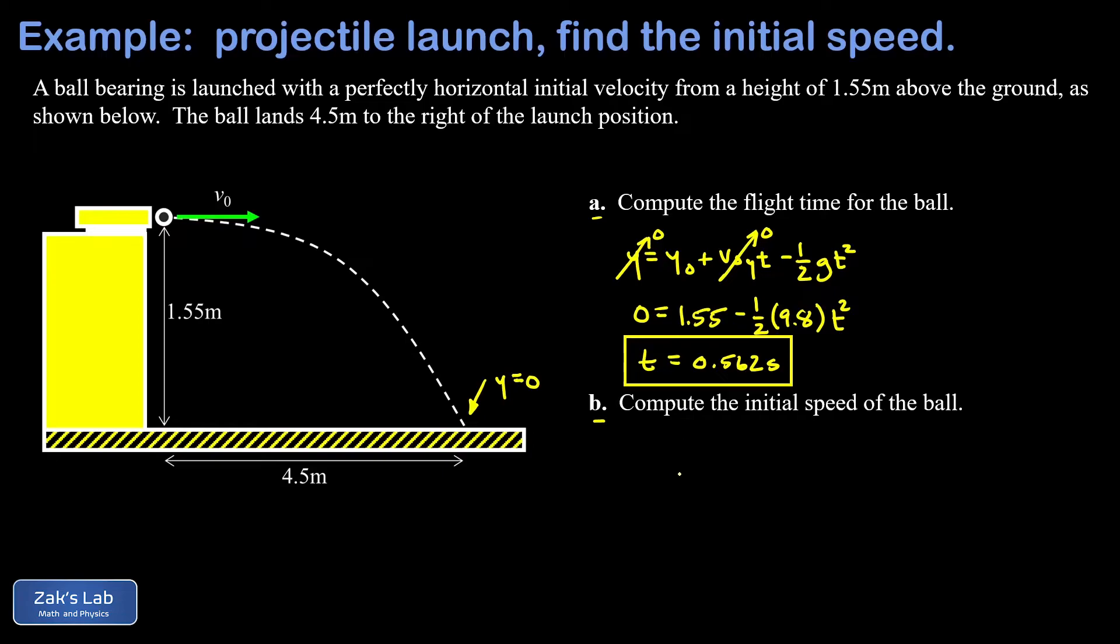In part B, we're asked to compute the initial speed of the ball, and this is a horizontal question. If I look at my X equation of motion for projectile motion, that's X equals X naught plus V naught Xt. And if I suppose that my initial X position is zero, I find that my final X position is given by the initial X velocity times T.